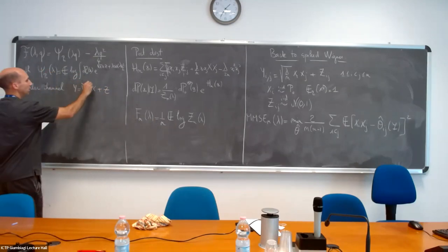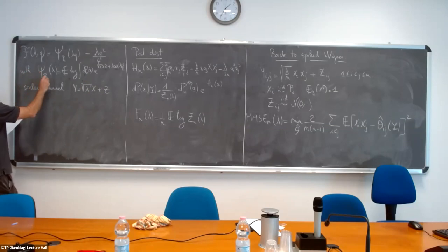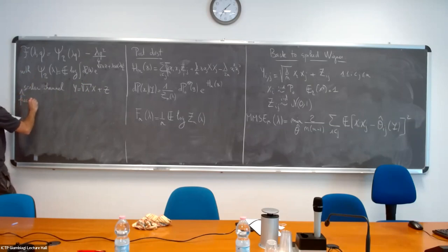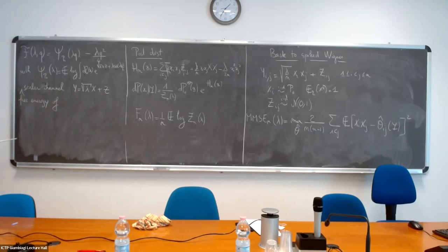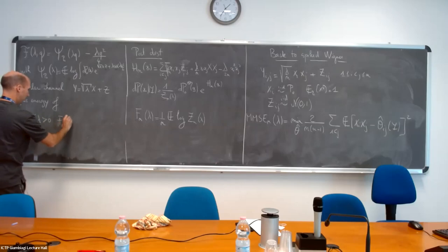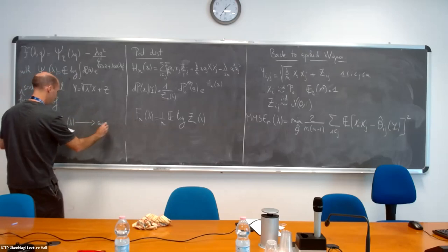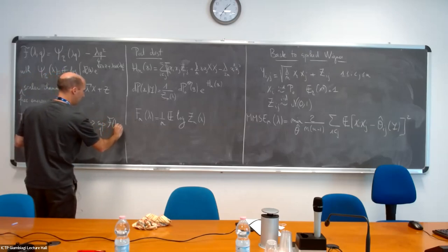This is the scalar channel with additive noise where you have a prior p₀ on x — this is the corresponding free energy. Now here is the theorem: for all lambda, f_n(lambda) is converging to the supremum over q of s(lambda, q).